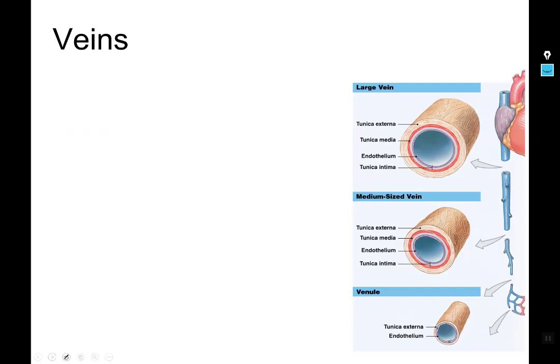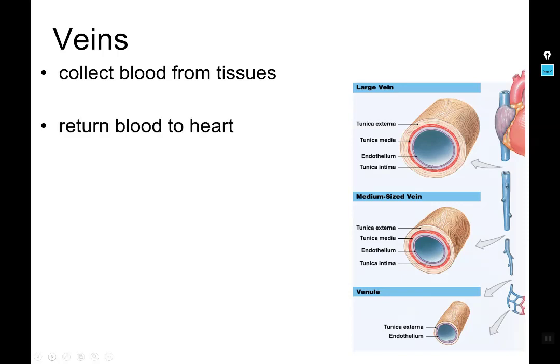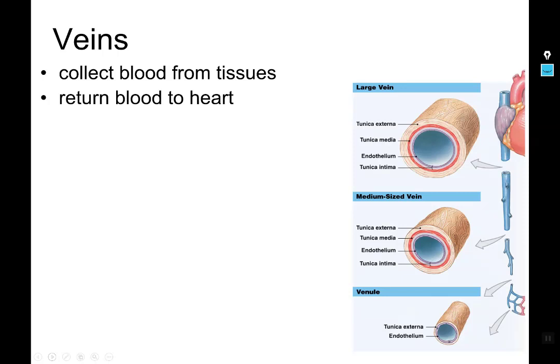We're not going to focus a ton on veins because we have some more important and more physiological stuff to do, but veins collect blood from tissues and return blood to the heart. In the systemic circuit, that blood is oxygen-poor, but in the pulmonary circuit, the blood being collected is from the pulmonary capillaries wrapped around alveoli, and that blood is oxygen-rich — so the pulmonary veins carry oxygen-rich blood back to the heart.